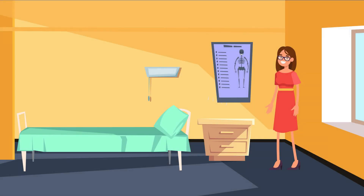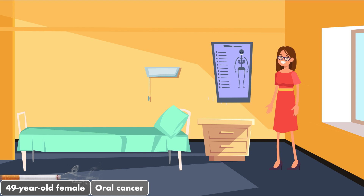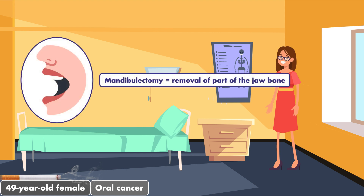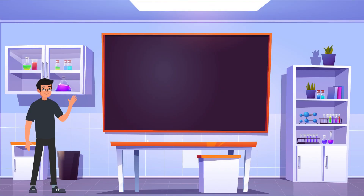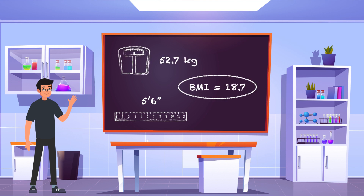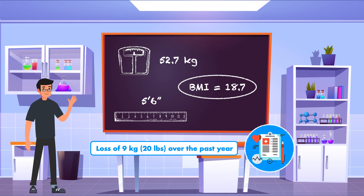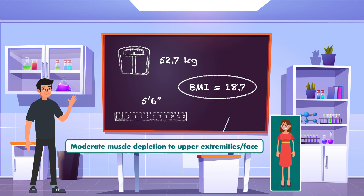The best way to see how this works is through an example, and today we have Jane. Jane is a 49-year-old female who is an active smoker with a past medical history of oral cancer. Jane has presented to the hospital for surgery where she will undergo a partial mandiblectomy, a total glossectomy, and the placement of a percutaneous endoscopic gastrostomy for long-term tube feeding. You are the registered dietitian, and you have been consulted to assess the patient. A review of Jane's medical record reveals she is 5'6 and 52.7 kilograms, with a BMI of 18.7. She appears thin with moderate muscle depletion to the upper extremities and face.